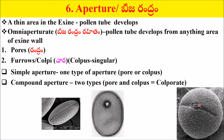In this pollen morphology description, we will review the NPC system of classification. Colpus with a pore should be present together in compound apertures. We will continue with NPC system classification in the next video.